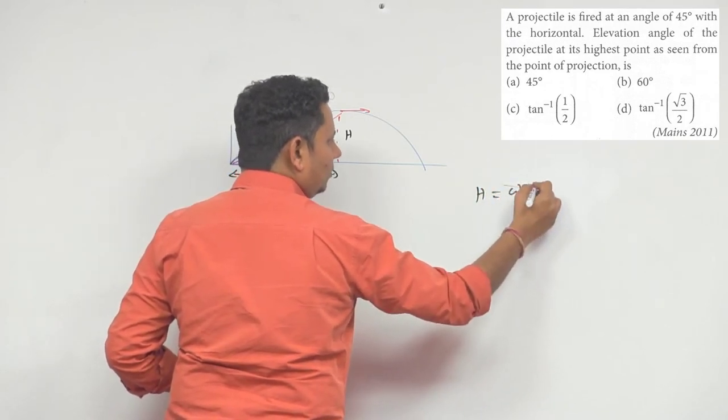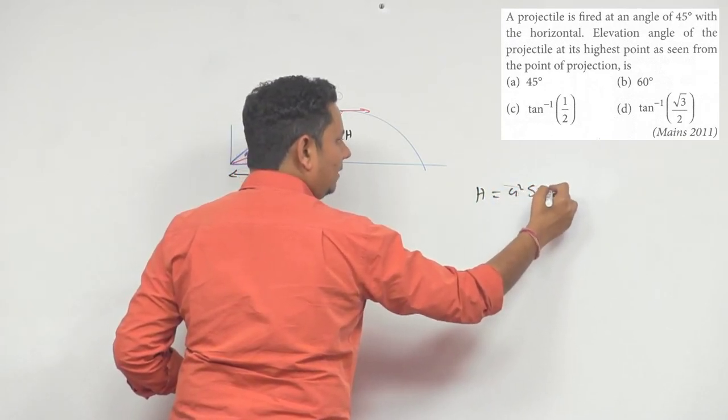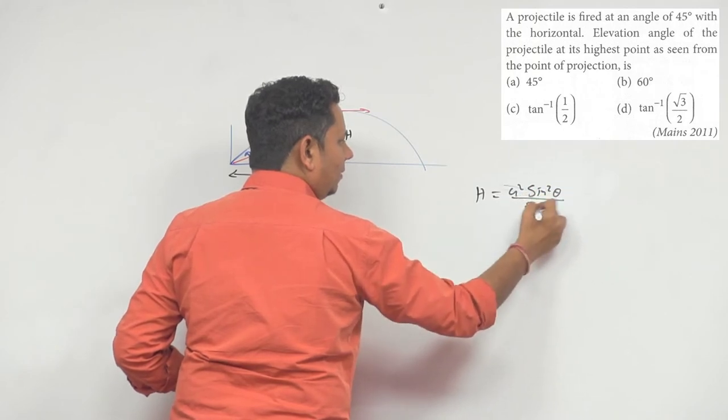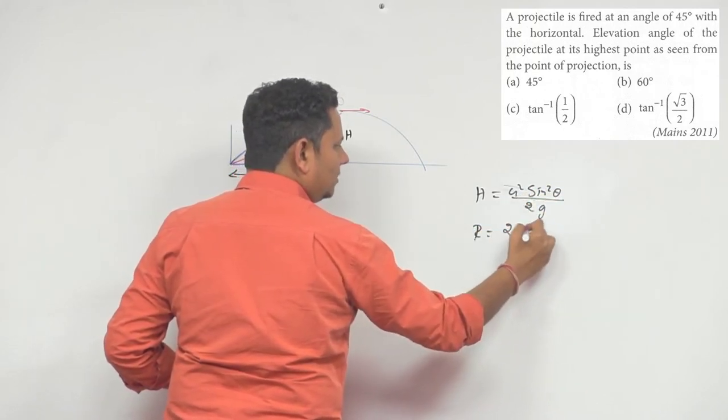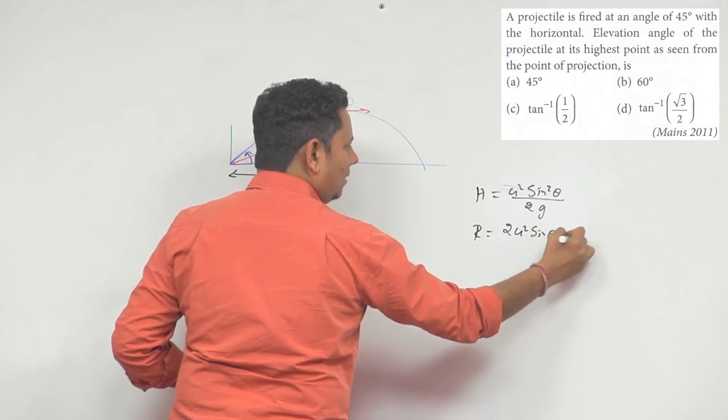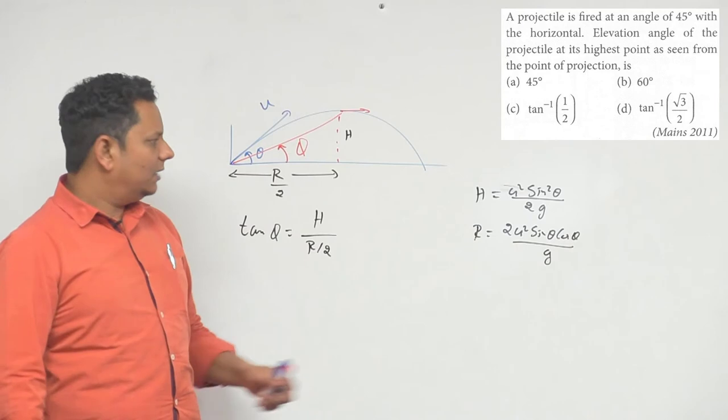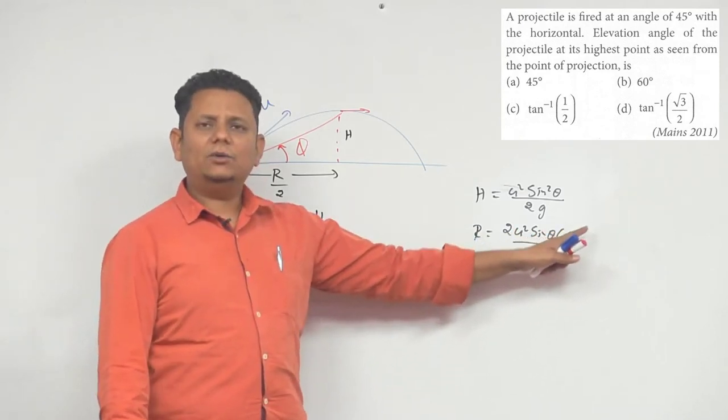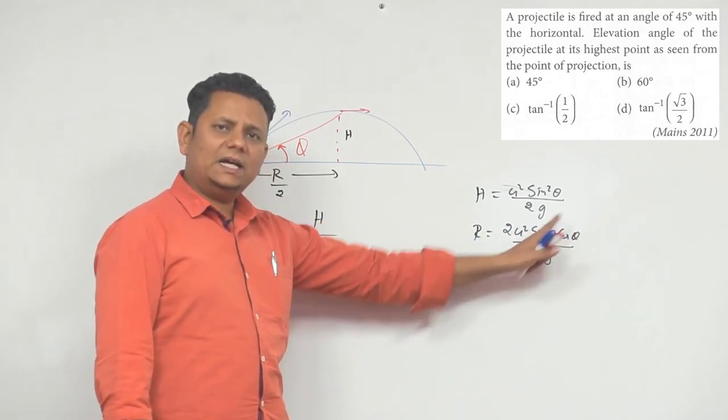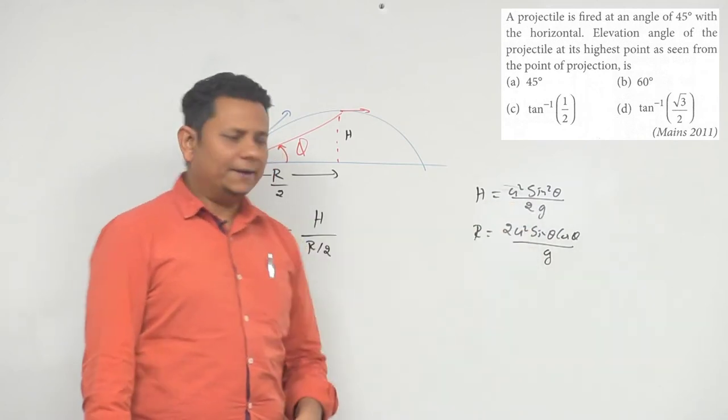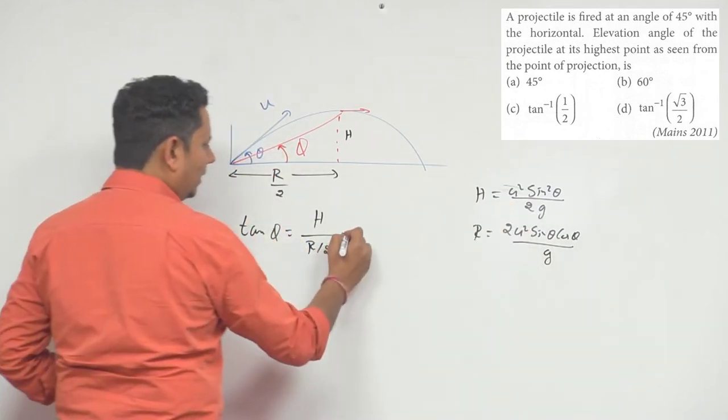h equals u squared sin squared theta divided by 2g. R ki value ho jayegi twice u squared sine theta cos theta divided by g. This is a popular formula that students should remember: u squared sine 2 theta divided by g, because sine 2 theta equals 2 sin theta cos theta.